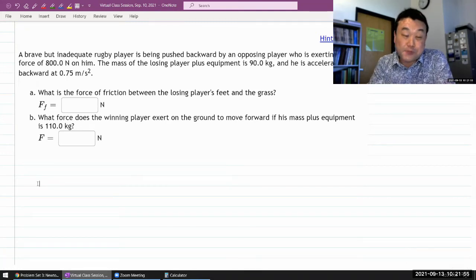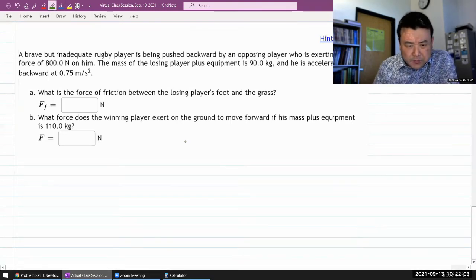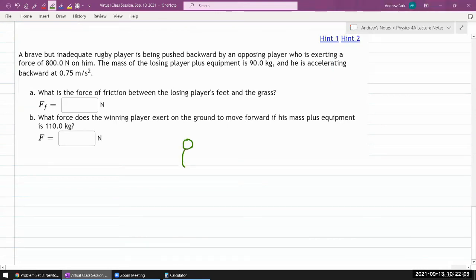Okay, so the question says a brave but inadequate rugby player is being pushed backward by an opposing player. Let me just start doodling. I guess we got two people who are interacting, so I got one rugby player and there is an opposing player who's pushing and exerting a backward force. Somehow in my head I imagined this player trying to go left, so that's how I'm drawing it.